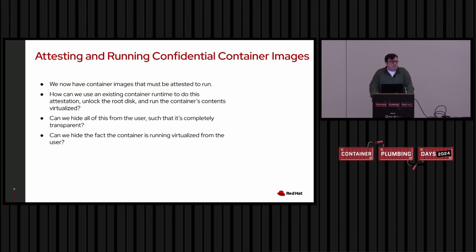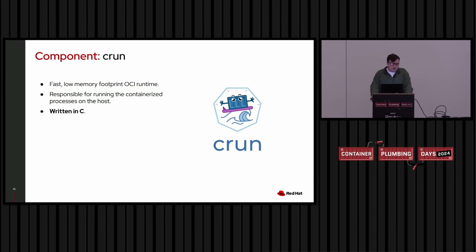Now that we have confidential workload images, how can we run them? Can we use existing container runtimes to do attestation, unlock the root disk, and run the container's contents virtualized? Can we hide all of this from the user so it's completely transparent — they think they're just running a normal container — and even hide the fact that it's running virtualized?